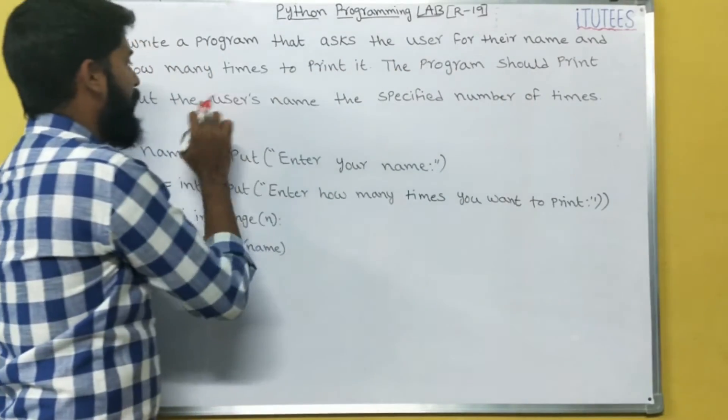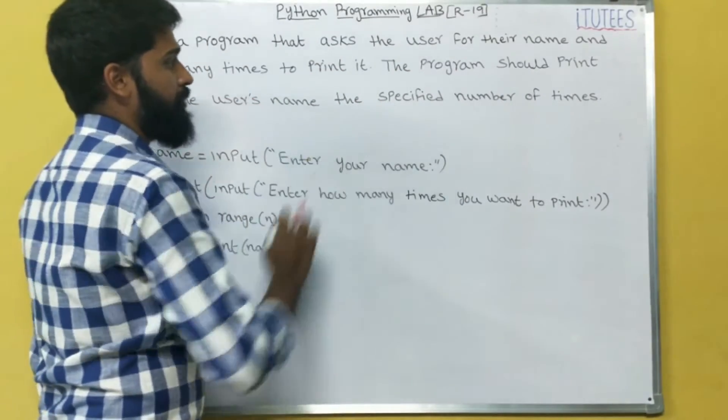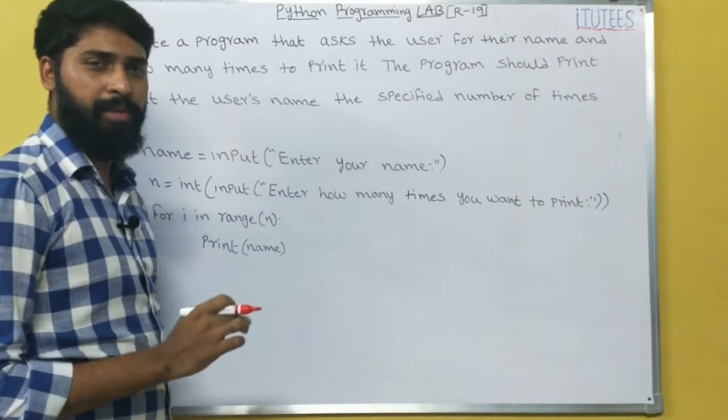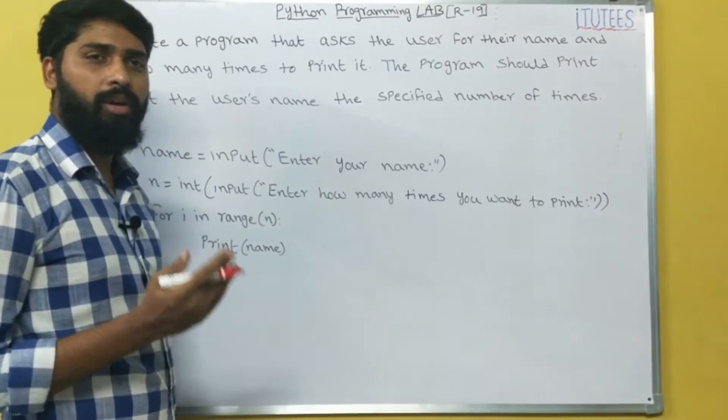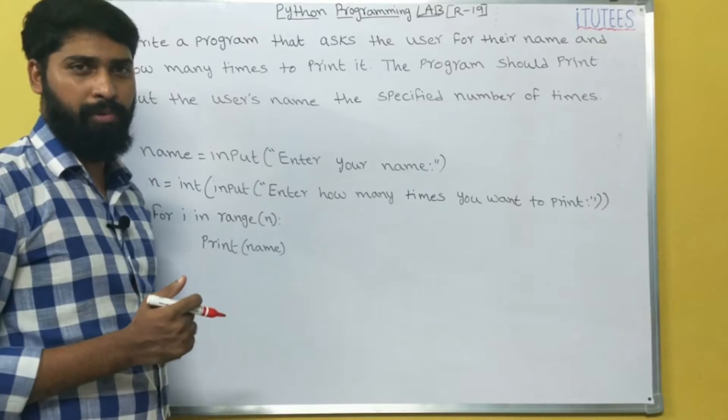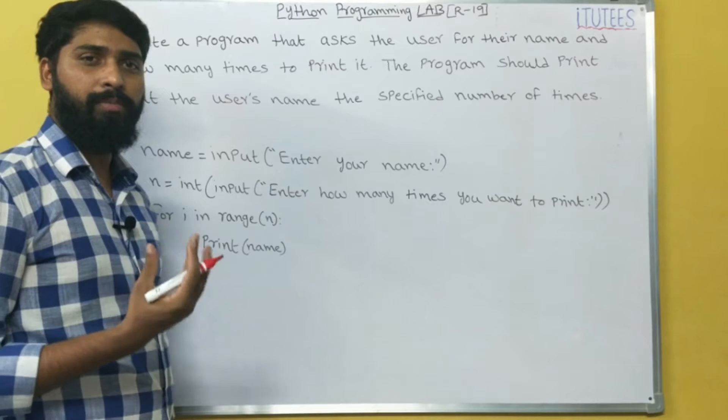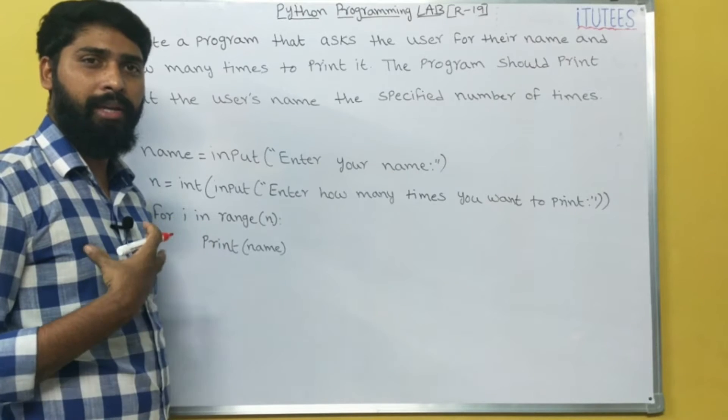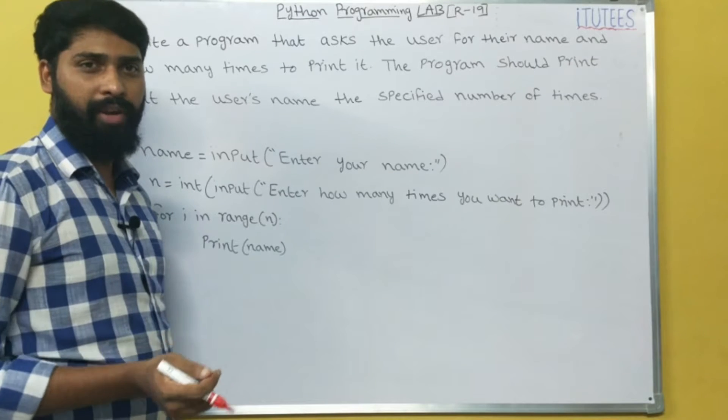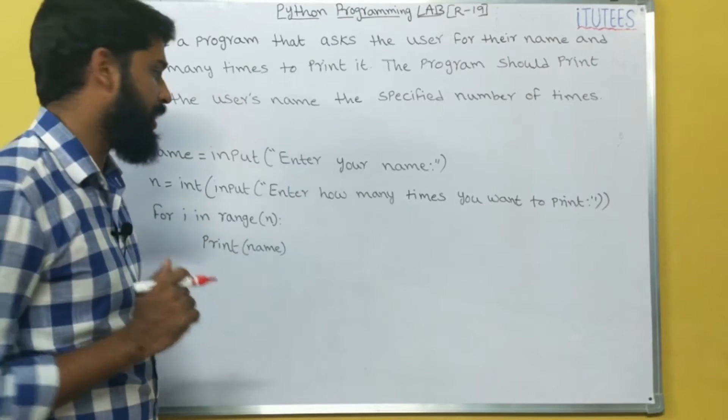The program should print out the user's name the specified number of times. That means what is the problem? You are going to read your name from keyboard, after that you can specify a number. For example, I can give the input as 5, that means my name is going to be printed 5 times. So we can see how we can write the program.